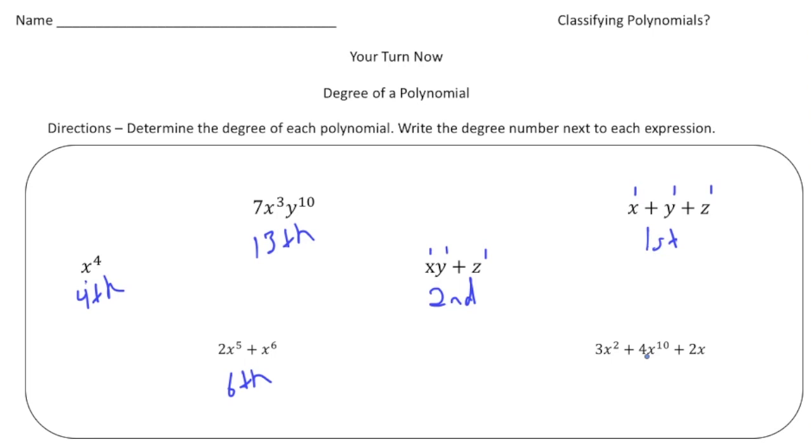And then last but not least, we have 3x squared plus 4x to the 10th plus 2x. And the 10 is the highest power we have. So this whole trinomial would just be written to be 10th degree. How'd you do?